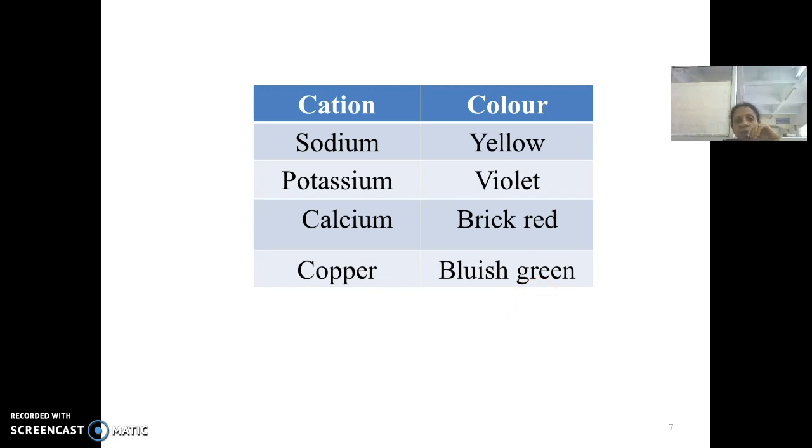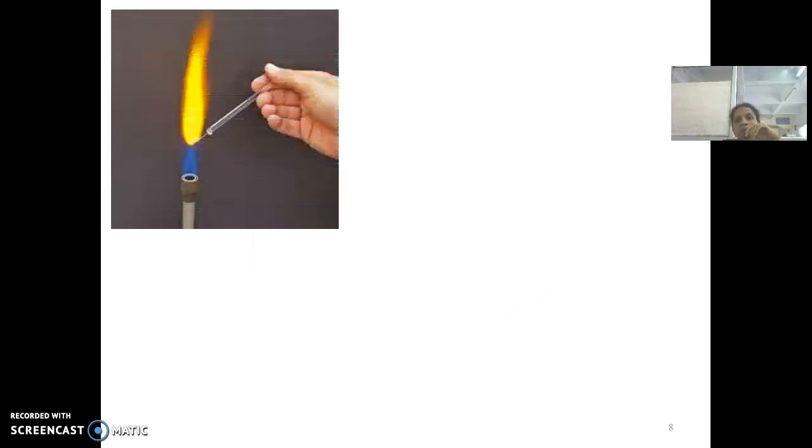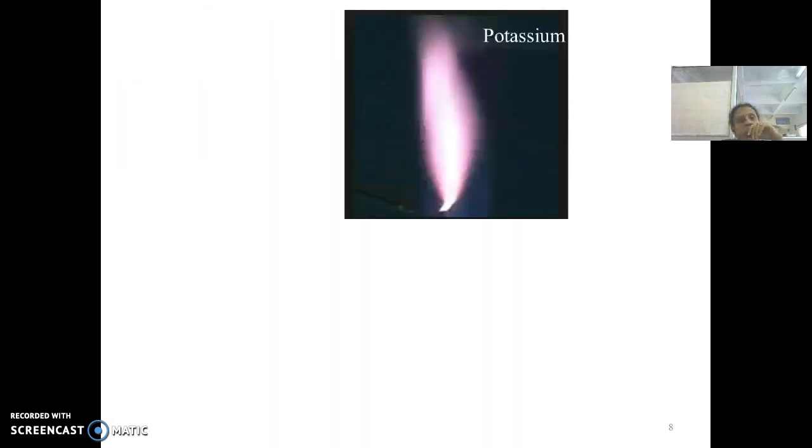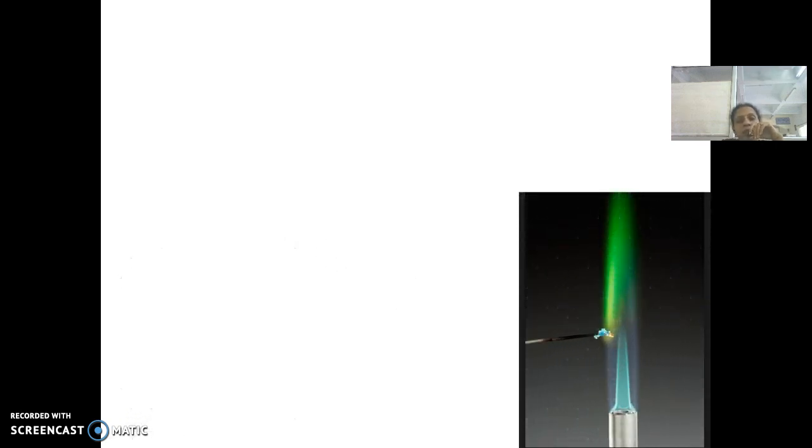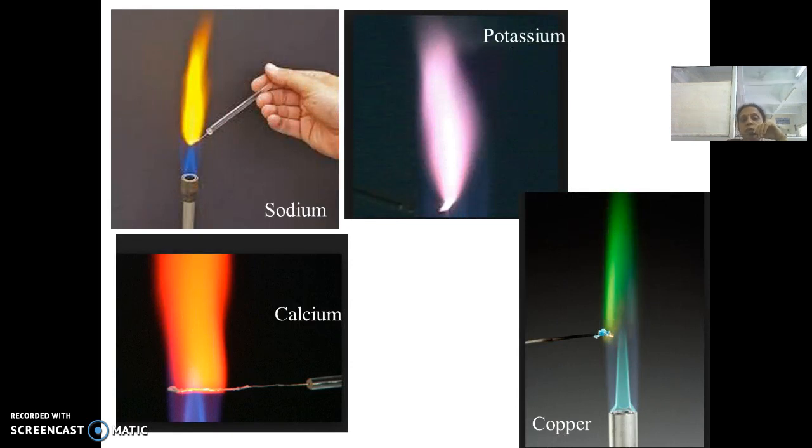But these long, long charts and tables are very, very difficult to remember. But same thing, if you do practically, for example when you subject a compound to flame, if it is giving yellow color, that means it is sodium. Similarly, if it is giving violet color, you may assume it as potassium. Similarly, if it is giving brick red color, then you can say it is calcium. And if it is giving bluish green color, based on that you can say the cation present may be copper. So like that, if you do the experiment, you will try to remember all those colors in your mind, and accordingly you will be reproducing the same in your examination.